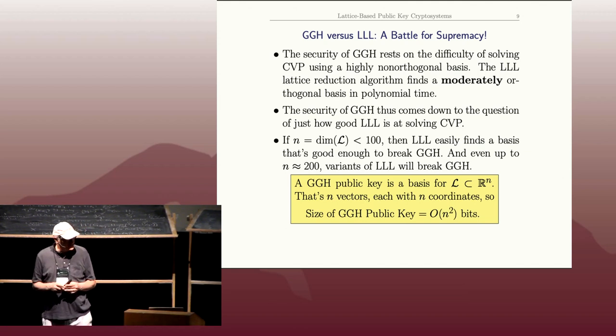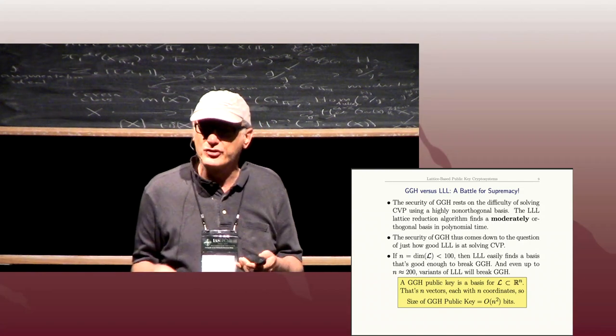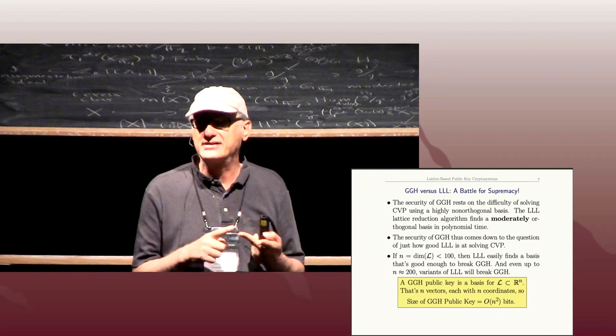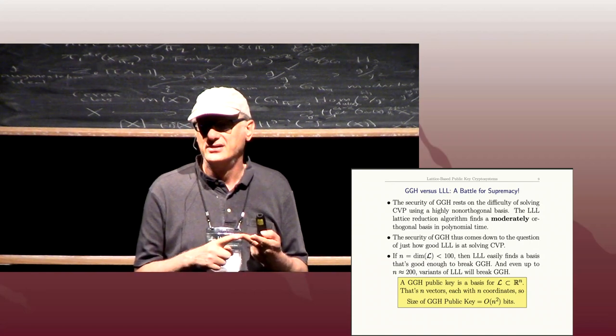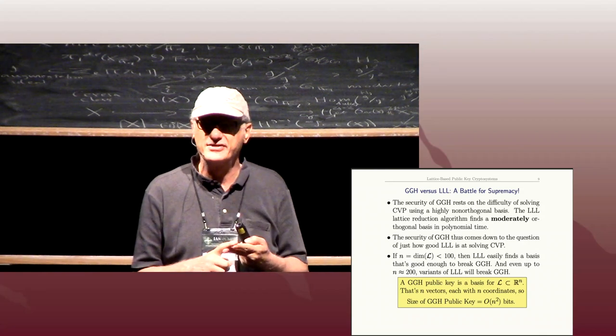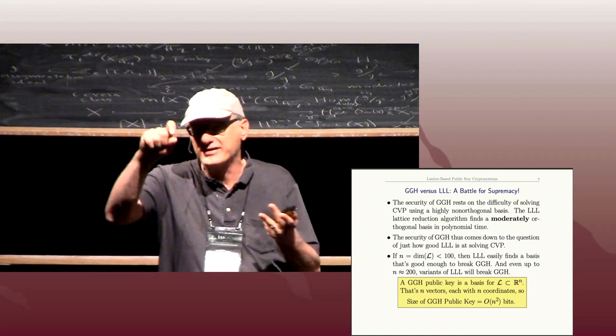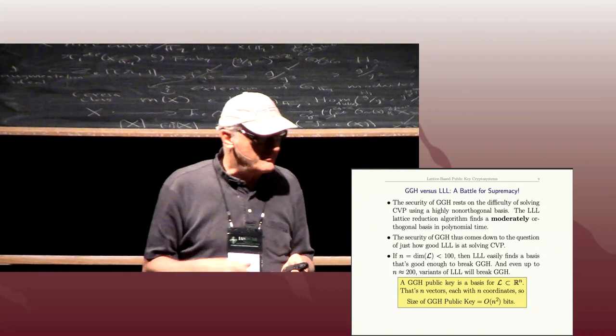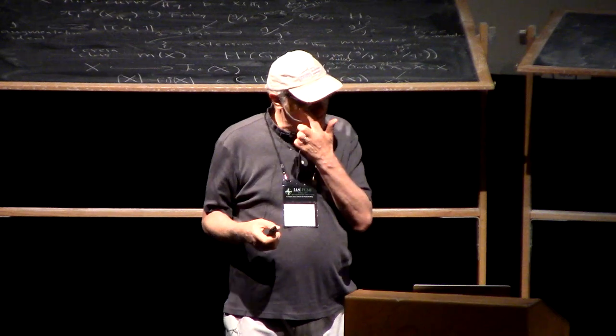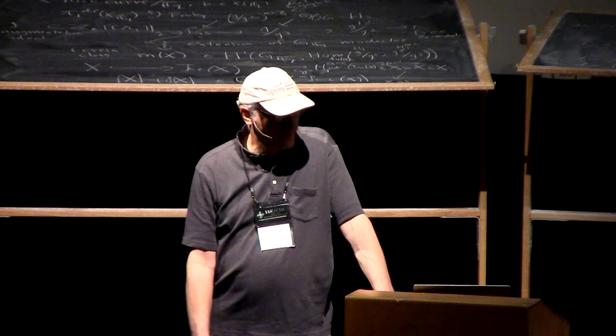What does a GGH public key look like? It's a bad basis for the n-dimensional lattice. Each vector in the basis has n coordinates, so there are n² numbers in the matrix. I haven't even kept track of how big their coordinates are, but there are n² numbers there. So the GGH public key is going to be roughly at least a multiple of n².